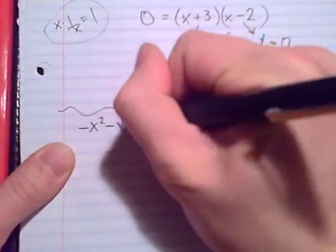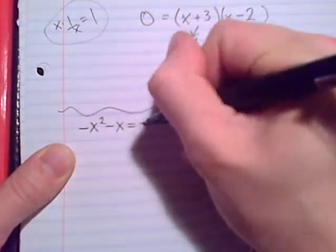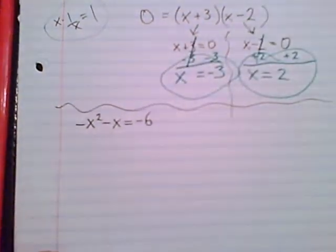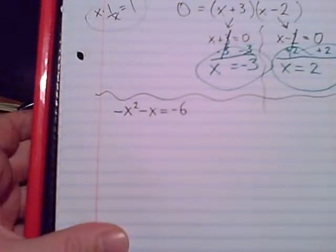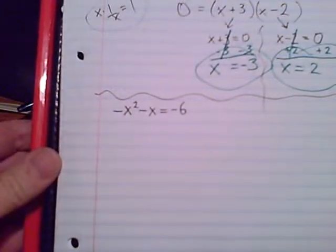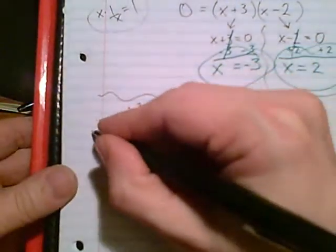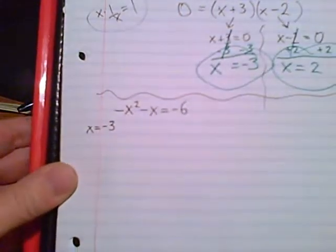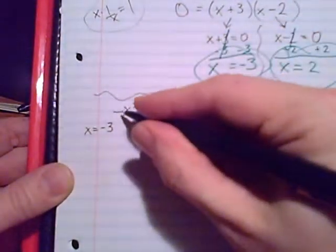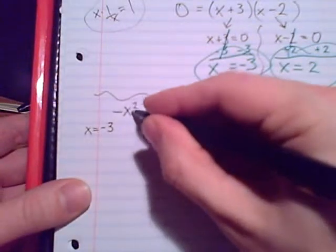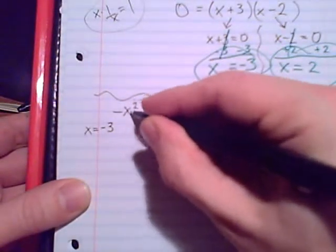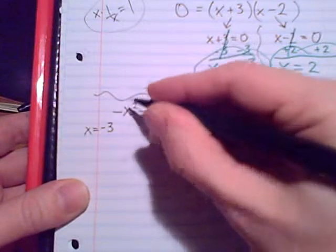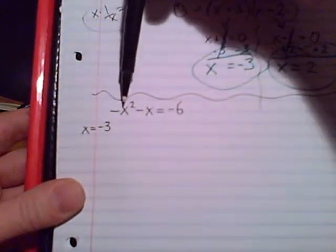Negative x squared minus x equals negative six. That was our original equation, and we're going to attempt to check our two solutions. We'll first start with x equals negative three. I'm cautious here. There's my x that I'm going to replace with a number in parentheses, sort of covering it up, just the x is what gets replaced.